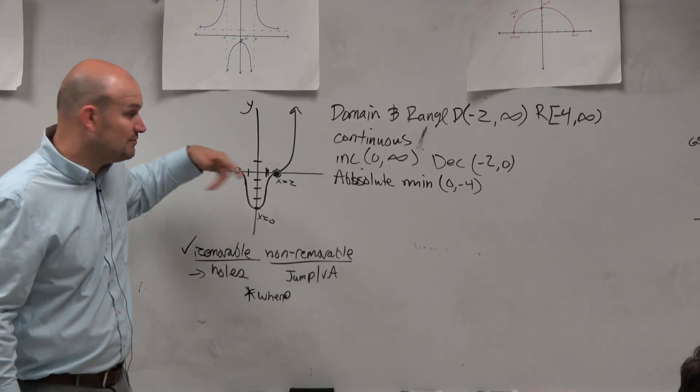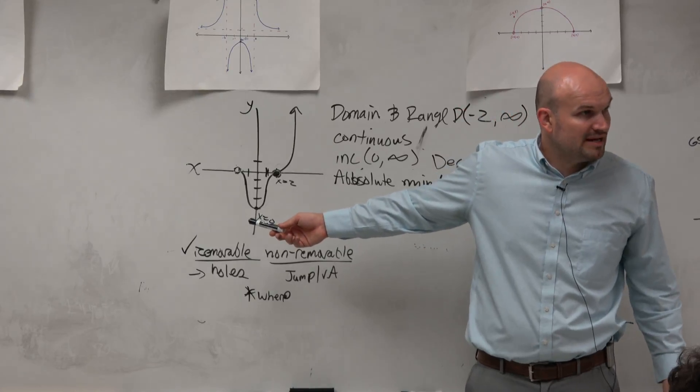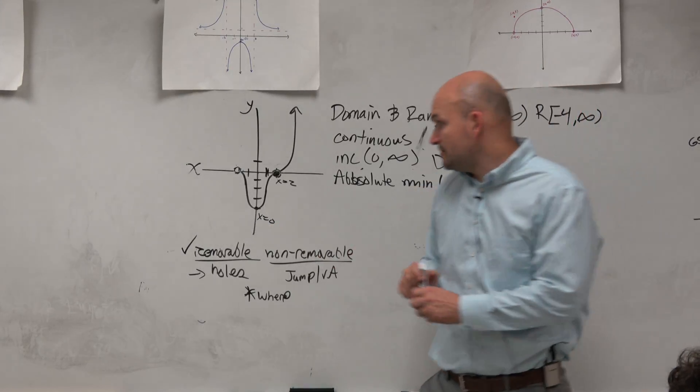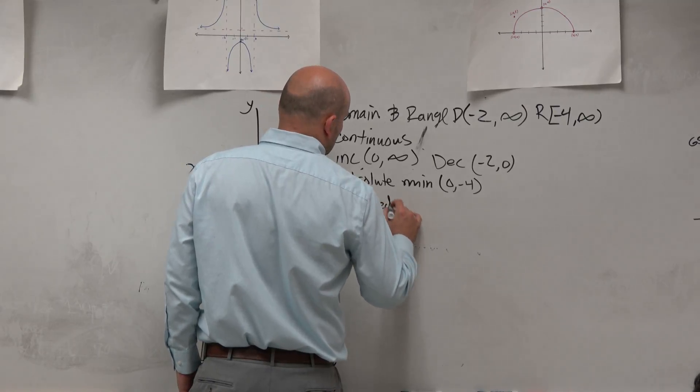This graph is not going to go any lower. There's really no reason for us to believe that that graph's going to go lower than that absolute minimum. Would you guys agree? So guess what? This is called bounded below.